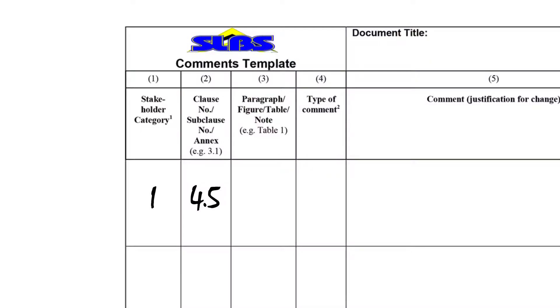For example, if it is paragraph one of sub-clause two, you put in the number one in this column. If it is table one or table two, you put in the table number in this column. Then the fourth column is the type of comment.